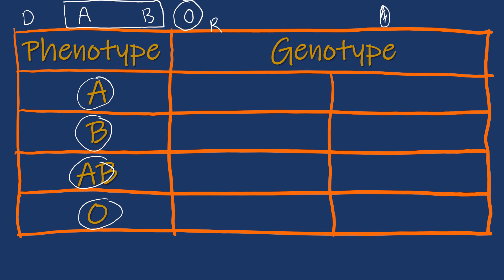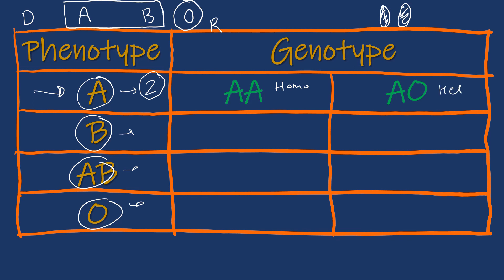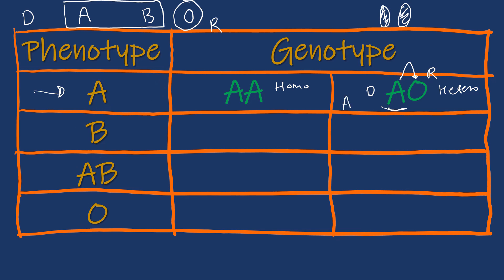We know that we have two alleles for each gene. The four blood groups have different genotypes with two alleles. Blood group A phenotype has a genotype of AA (homozygous) or AO (heterozygous). Since gene A is dominant over recessive gene O, genotype AO shows a phenotype of type A. Similarly, blood group B can be BB or BO, and blood group AB can only have genotype AB.